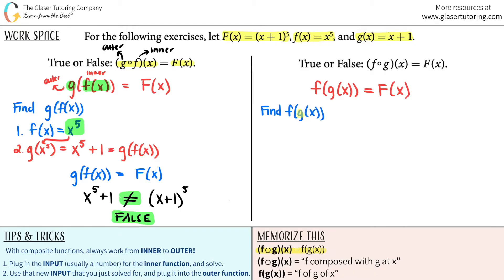Work from inner to outer. Your inner function here is the G of X function. Your F function is your outer function. So number one, G of X was just X plus one. And now I use that answer to plug in for my outer function, which is the F function. So now this would be F of X plus one, which means that when I go to my F function, lowercase, I plug in X plus one for all of the X's that I see.